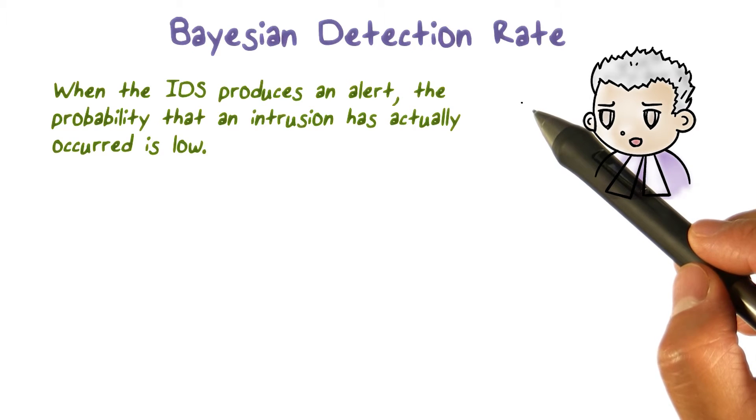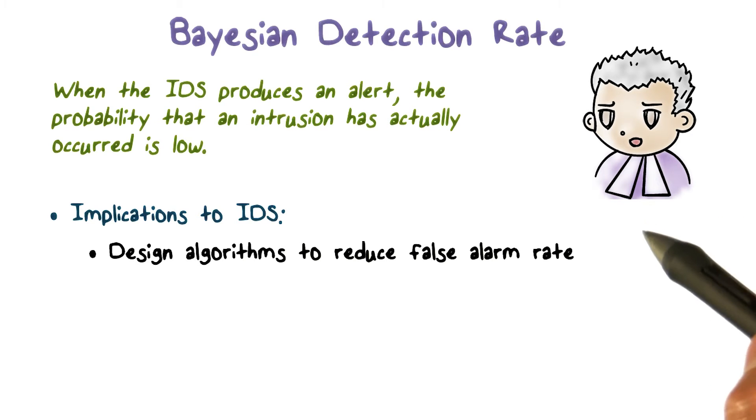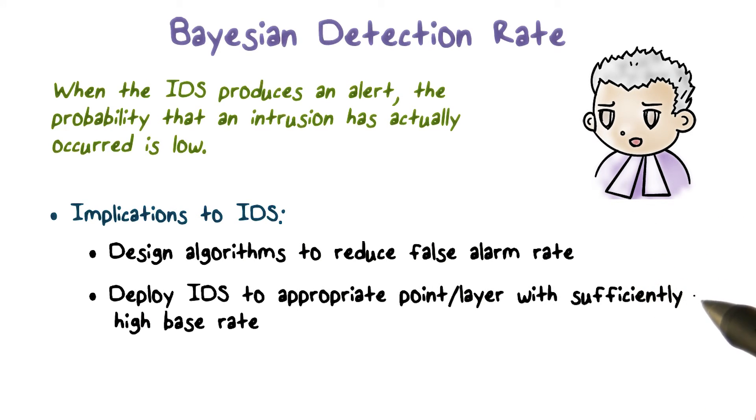So how do we address this problem? We can reduce the false alarm rate to be zero, or as much as possible. In fact, that's what the vendors of IDS have been trying to do. Or we can deploy the IDS to the appropriate layer so that at that layer, the base rate is sufficiently high. Modern day IDS use a hierarchical architecture to achieve this. We can also use multiple independent models.